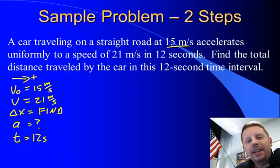Now, when I go to my kinematic equations to choose one that has v-naught, v, delta x, and t in it, I don't have one of those equations. However, what I can do is I can solve for a first and then solve for delta x.